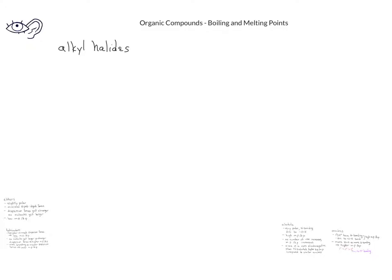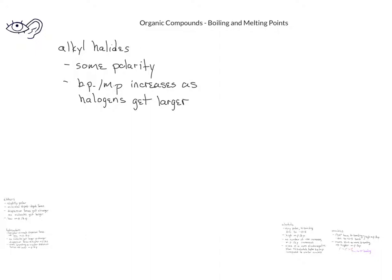Finally, let's look at the alkyl halide trends for melting points and boiling points. Alkyl halides do have some polarity depending on the electronegativity of the halogen atom involved. In general, the boiling point and melting point will increase as the electron cloud increases, or as the size of the halogen atom increases. For example, fluoromethane has a boiling point of -78.4°C, chloromethane has a boiling point of -24.2°C, and iodomethane has a boiling point of +42.4°C.